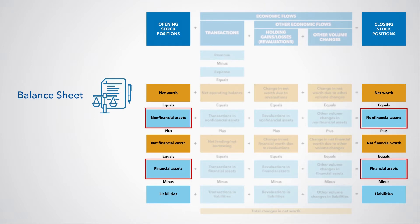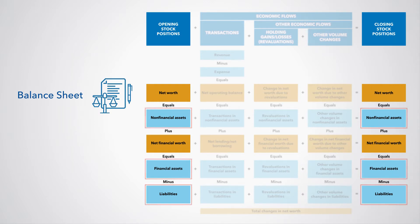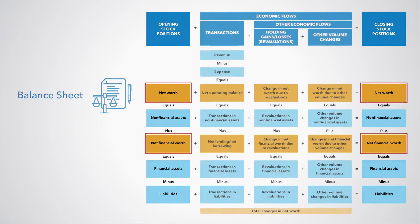The balance sheet provides a summary of all the assets owned and liabilities owed, along with the principal balancing items for the balance sheet — that is, net worth and net financial worth.